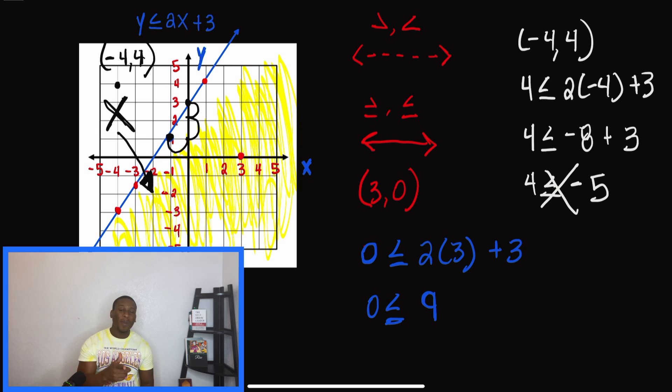Remember, when you're shading inequalities on a coordinate plane, make sure you double-check your answer by plugging in a point, or knowing that if it's less than, you shade under the line, and if it's greater than, you shade above the line.